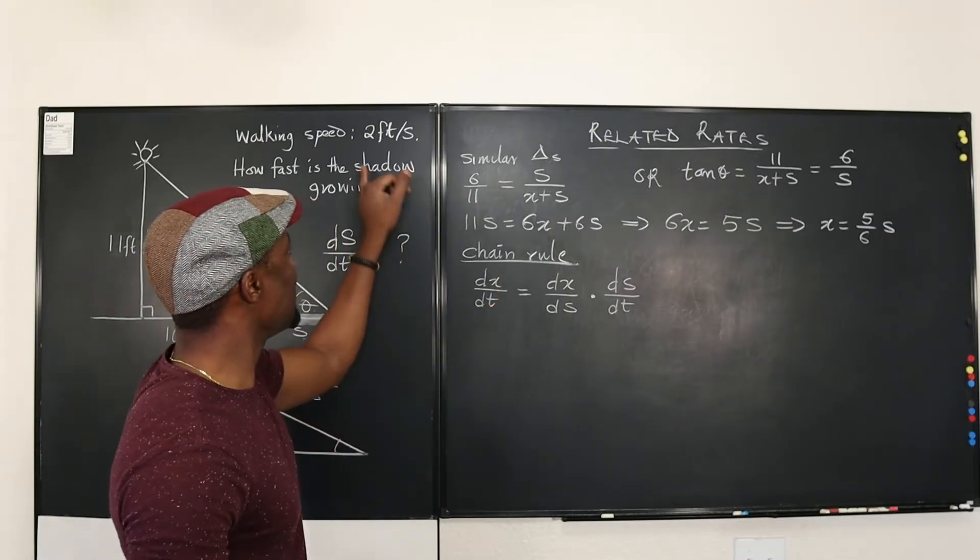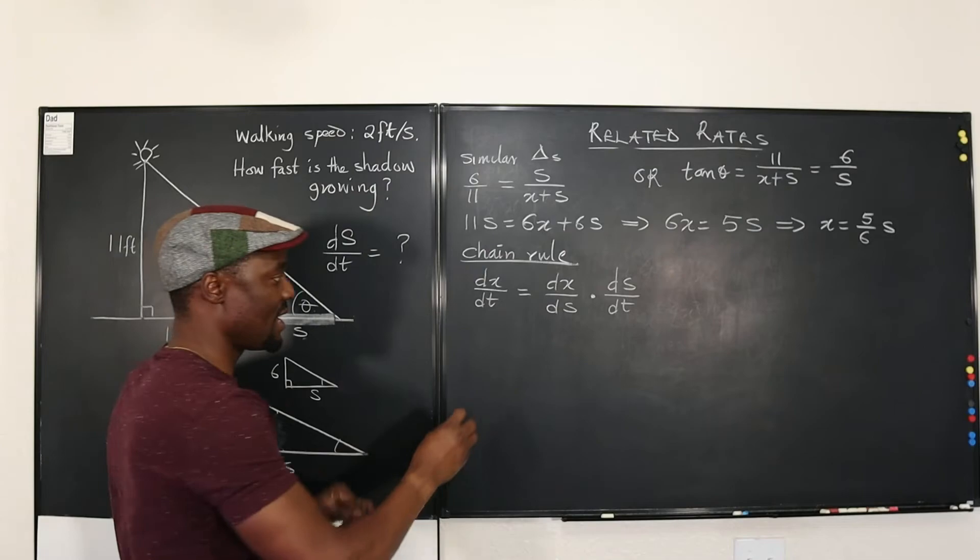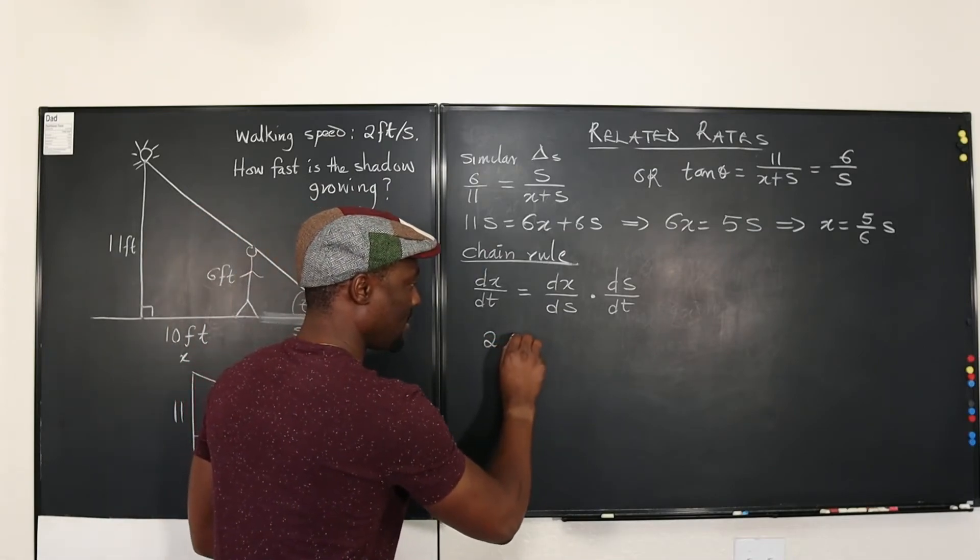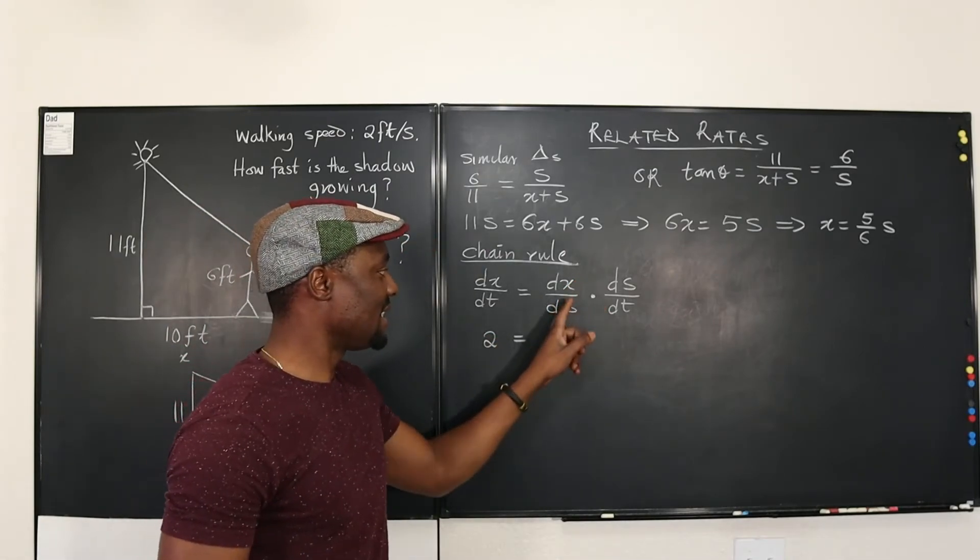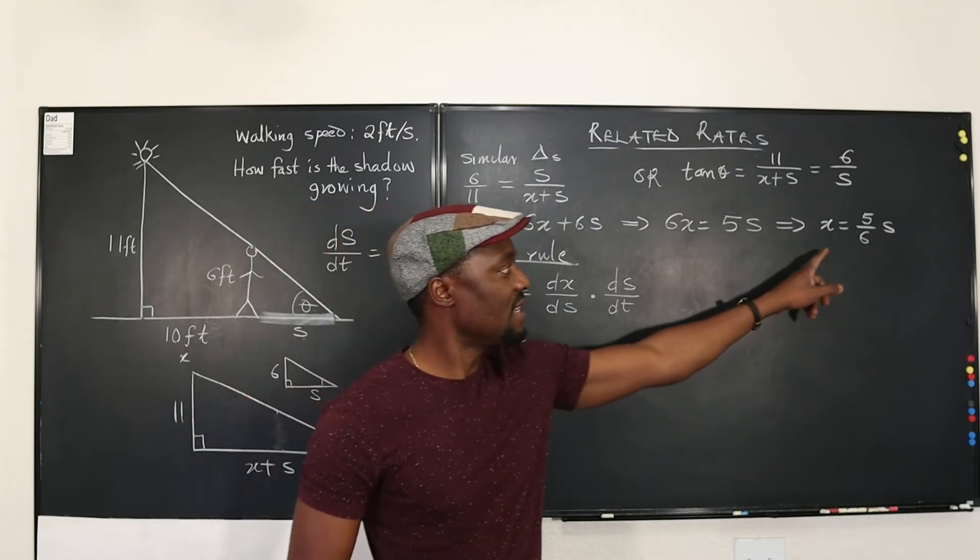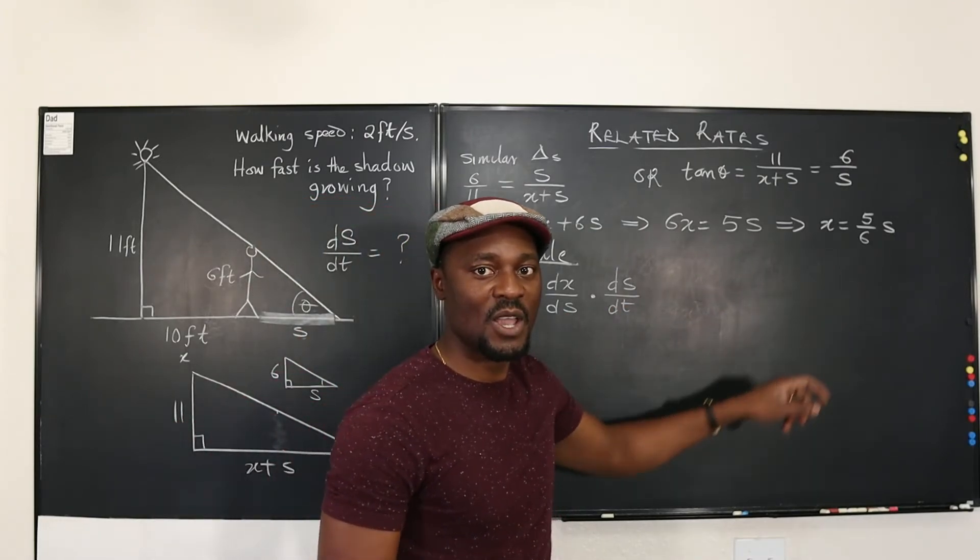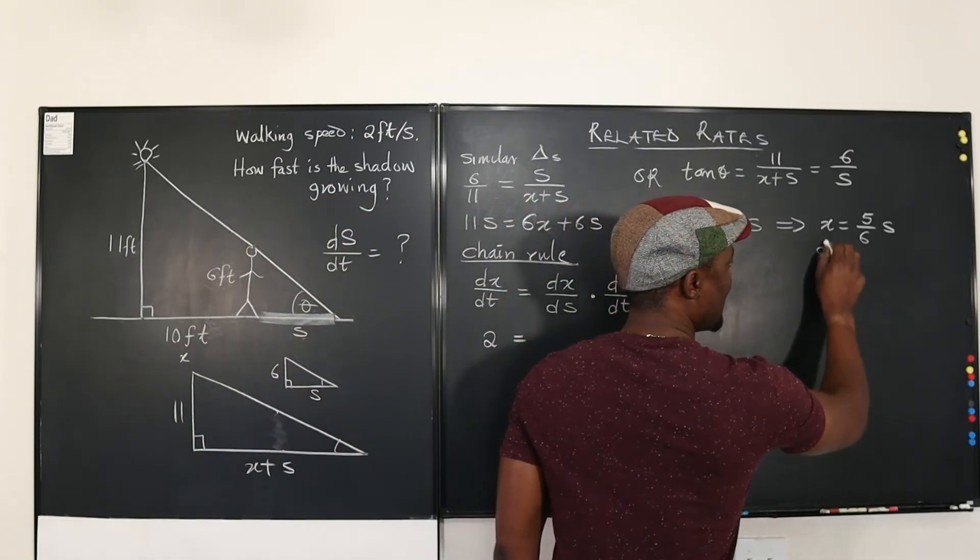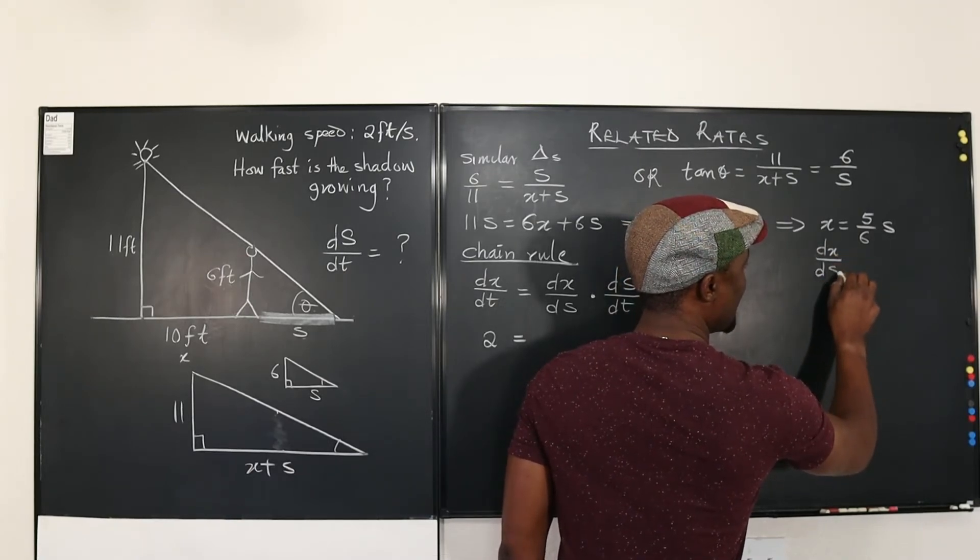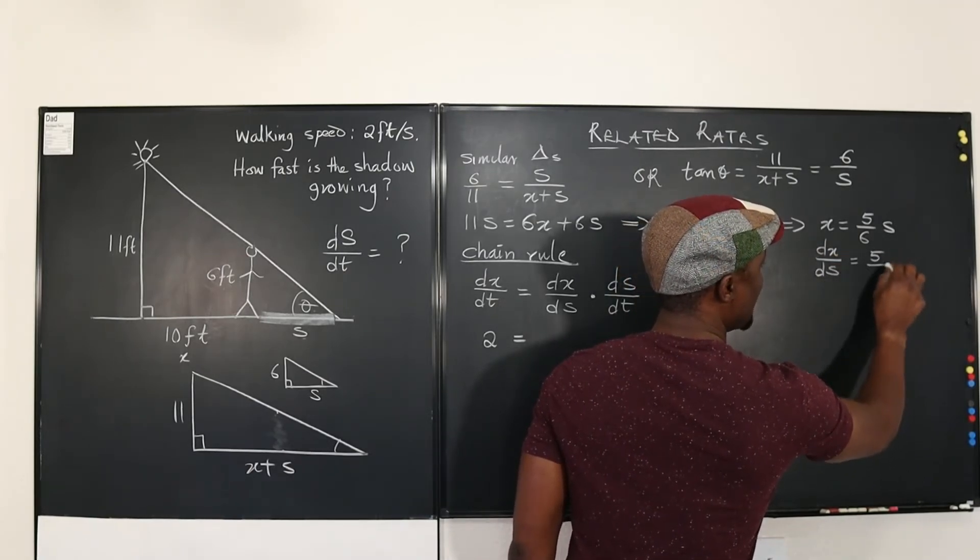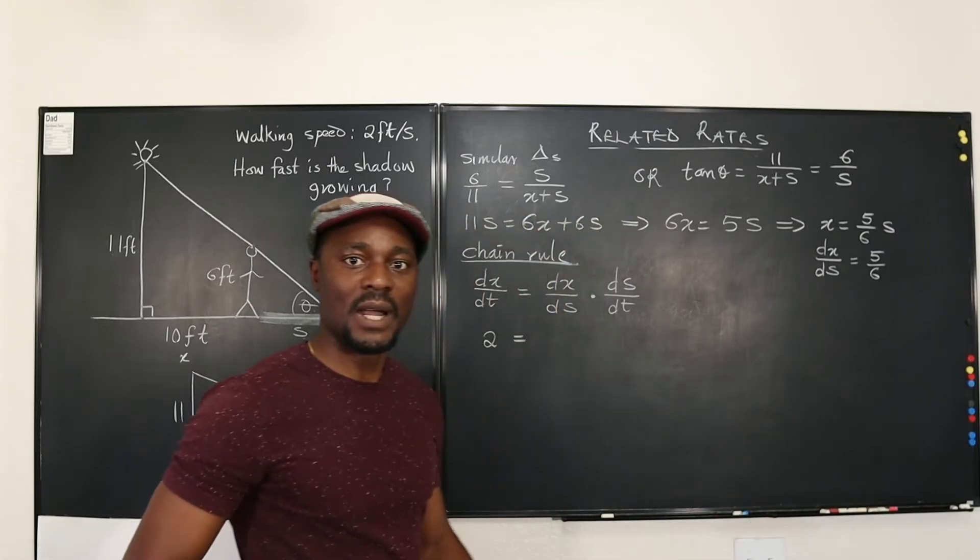What is DX/DT? The rate at which X is changing. They already gave us. It's 2. What is DX/DS? We don't know, but we can find it out from here. Differentiate X with respect to S. DX/DS equals 5 over 6. Done.